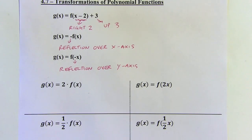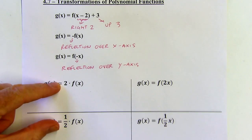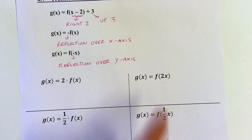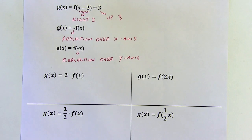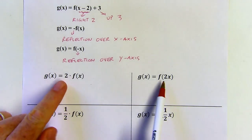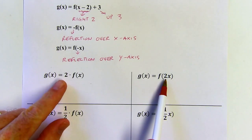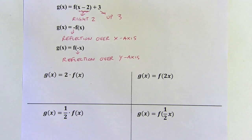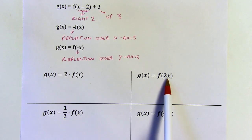So let's look at what happens when we have a number that's either multiplied in front of the function or multiplied just by the input. You're going to have some sort of stretch or compression, and that depends on the value of the number — whether it's more than one or less than one. If your number is one itself, then there's no stretch or compression. But anything greater than one or less than one will give you a stretch or compression. It also depends on the placement: whether you're multiplying the whole function by the number, or just multiplying the input by a number.